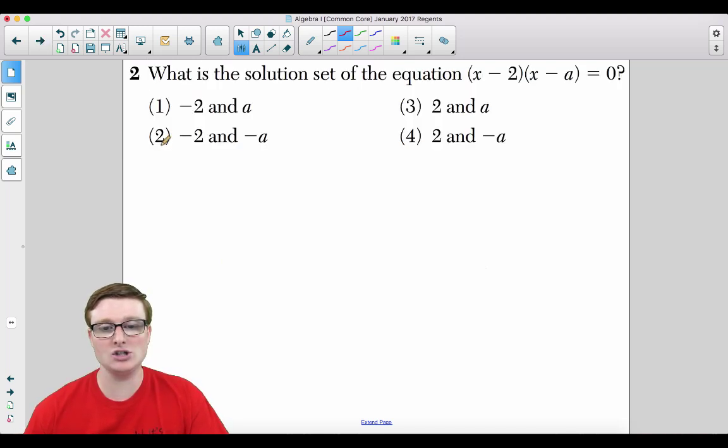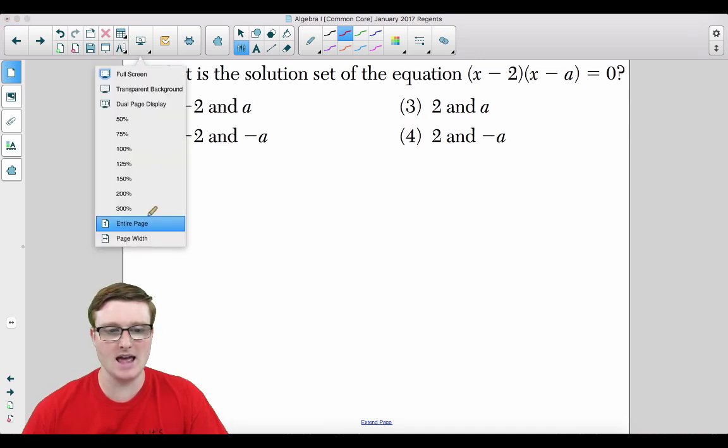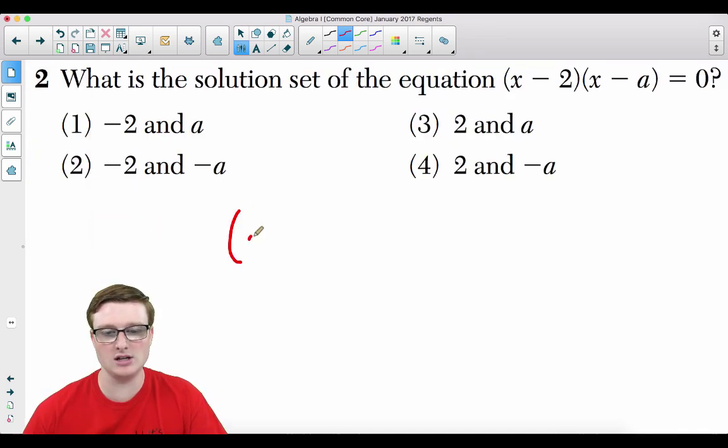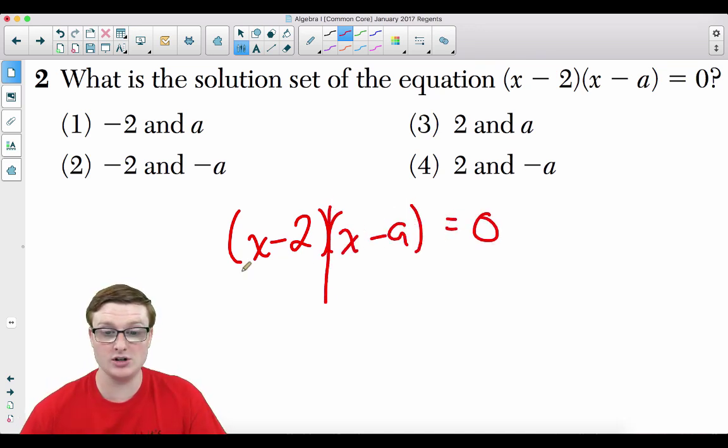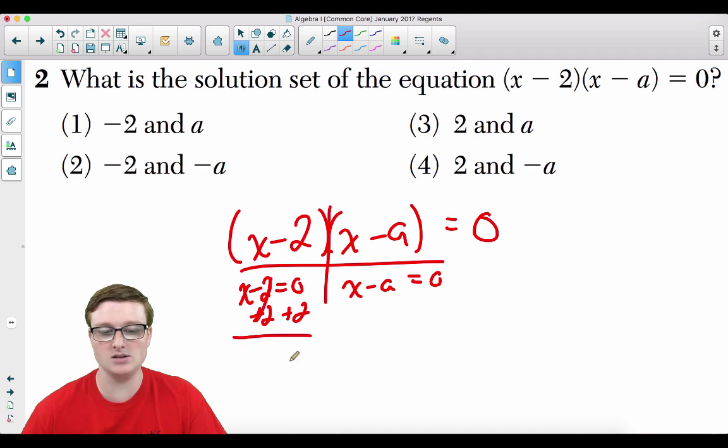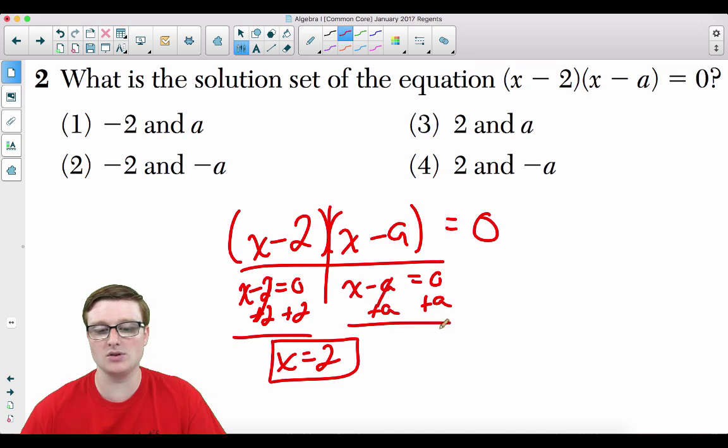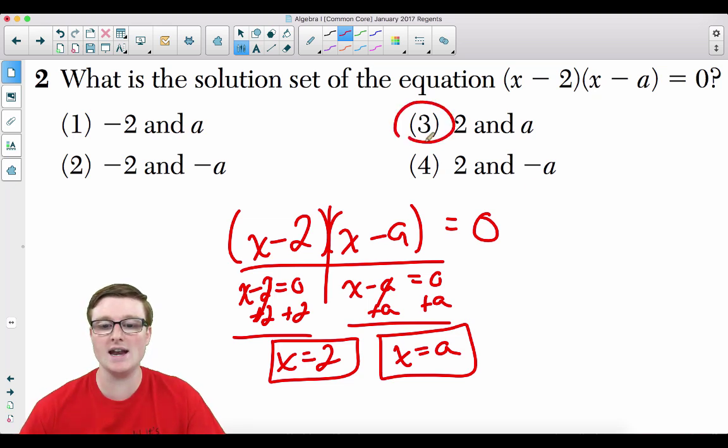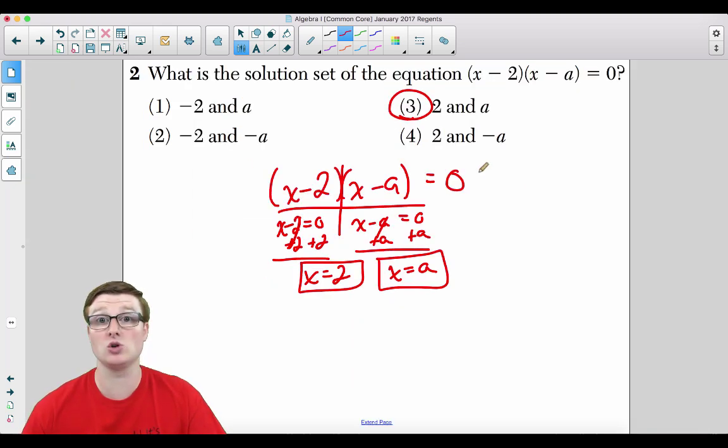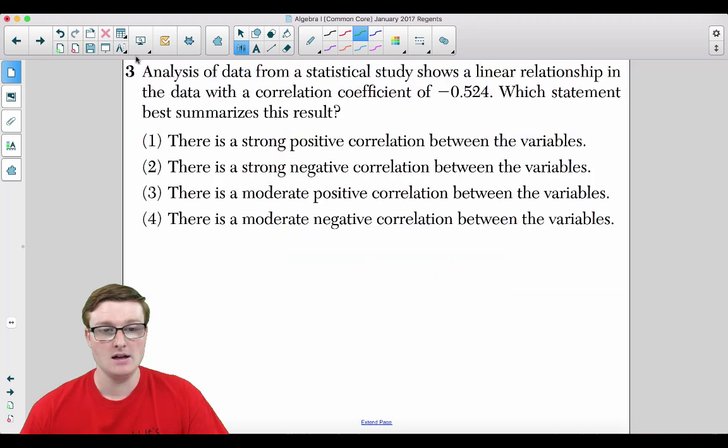Moving on to number 2. What is the solution set for the equation (x - 2)(x - a) = 0? All you need to do is set these binomials equal to 0. Draw your t-bar. You get x minus 2 equals 0, x minus a equals 0. You're going to add that 2 on both sides, we get x equals positive 2. And you're going to add the a on both sides over here, and you get x is equal to positive a. So your solution set is going to be 2 and a, which is going to be choice 3.